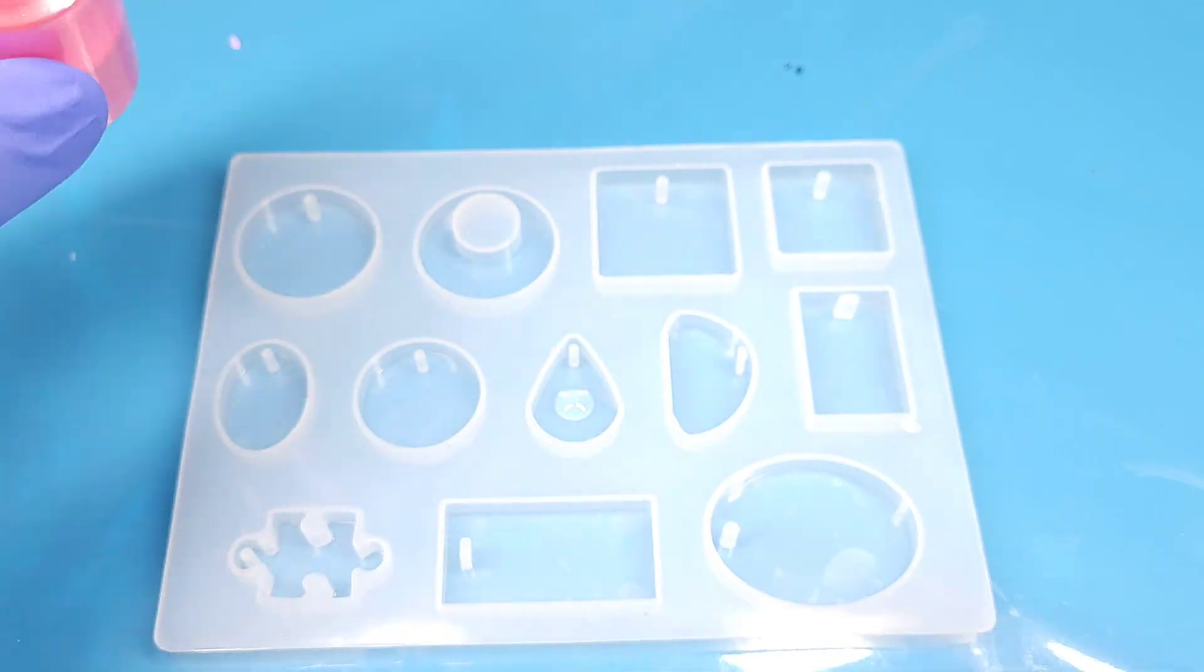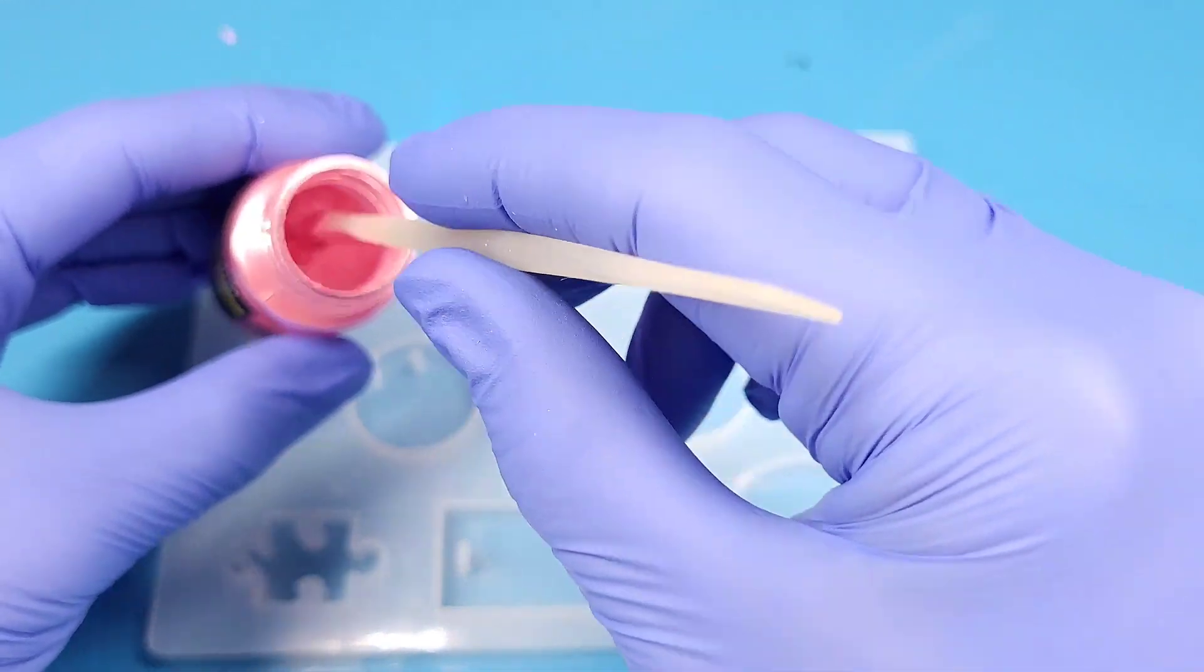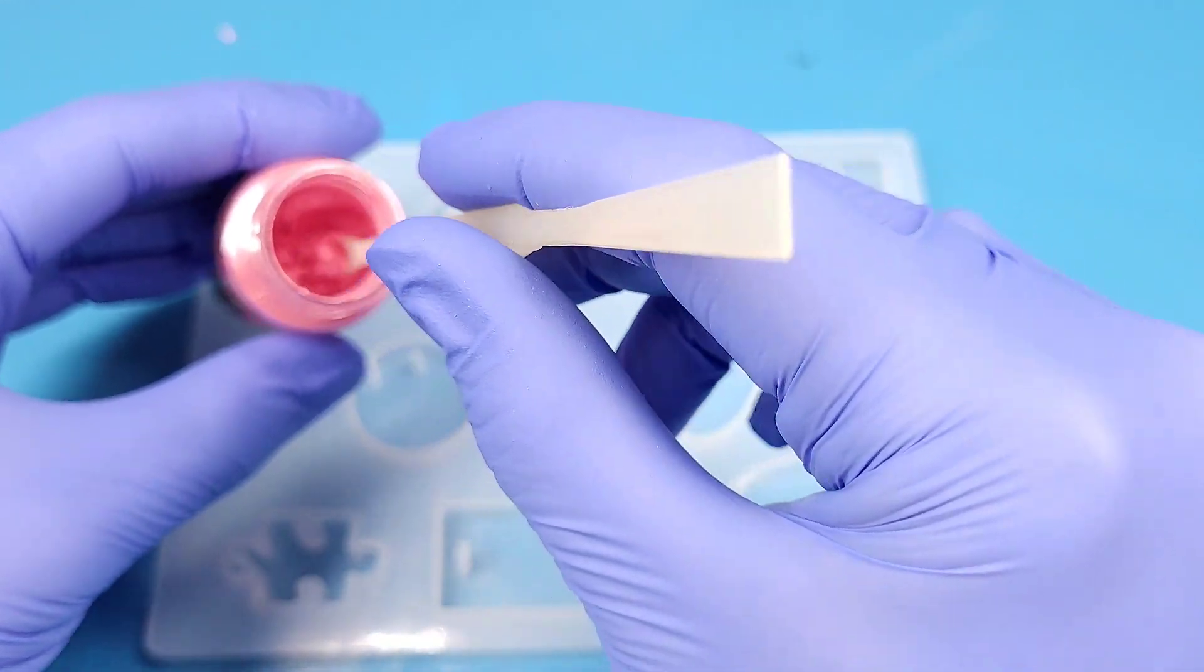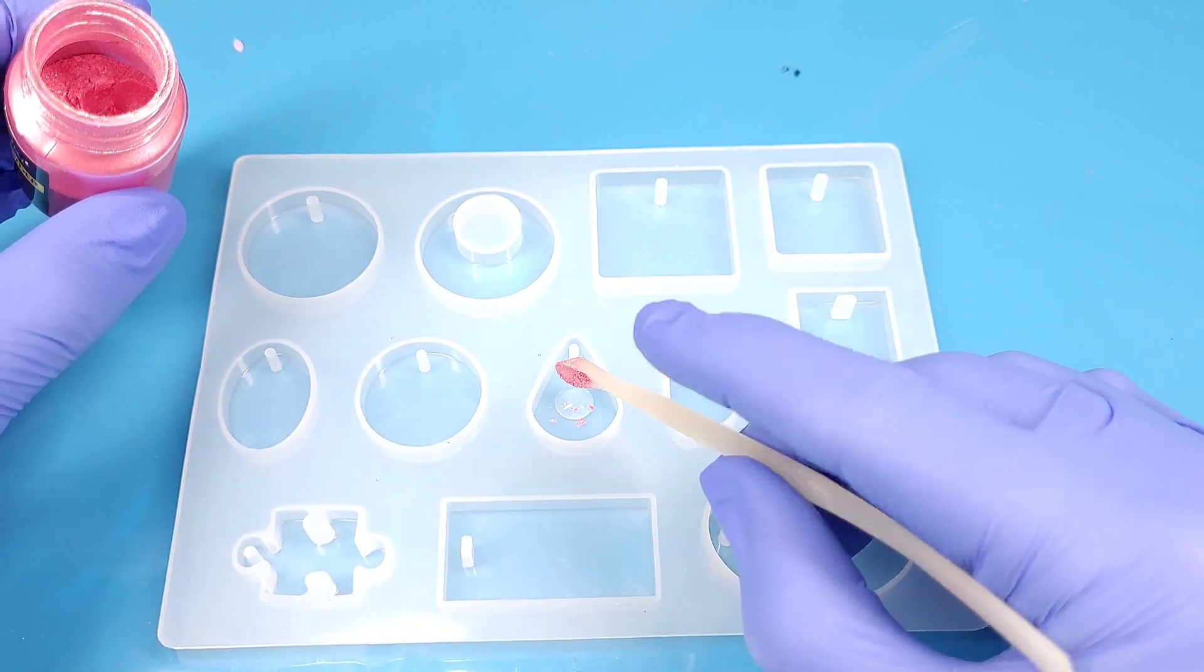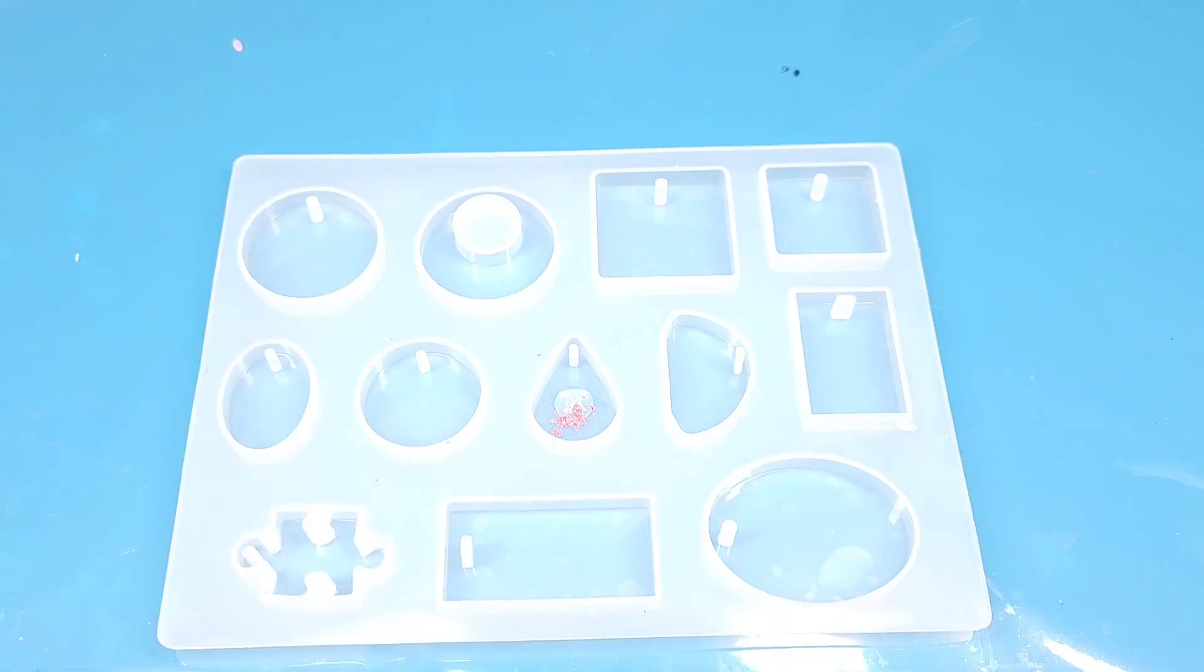As you can see, I use this rose pink mica powder for the first layer. I will work with different layers here. Just use one drop of resin and mix it with the mica powder.